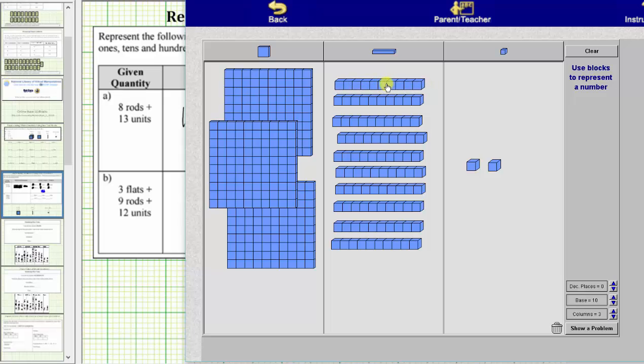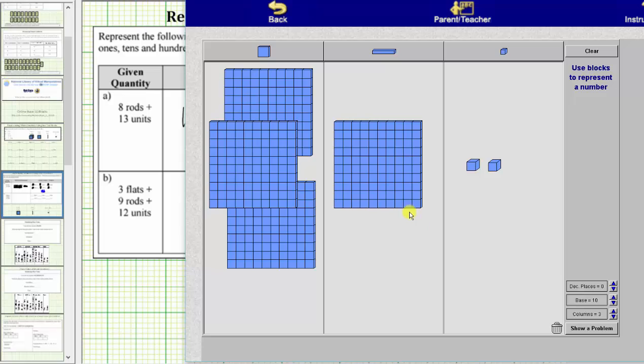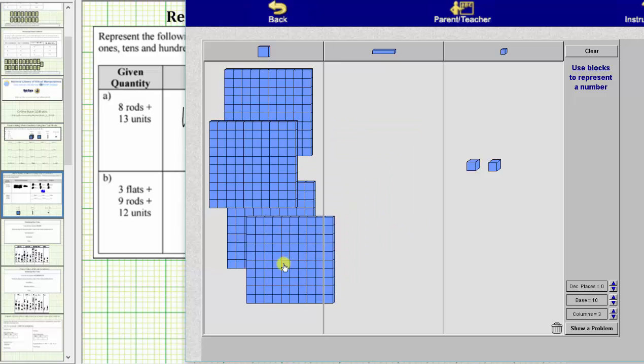But notice how now we have a total of one, two, three, four, five, six, seven, eight, nine, 10 rods. 10 rods equals one flat. So we'll perform another exchange. We'll exchange these 10 rods for one flat and move the flat to the next column.